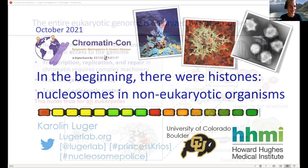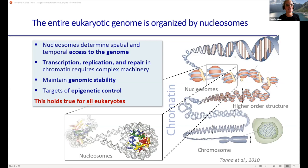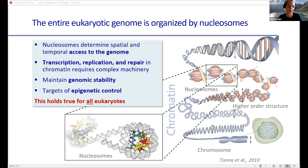The entire eukaryotic genome is organized by nucleosomes, and as such, they're really important to regulate access to transcription machinery, replication, repair. They maintain genomic stability and they're the targets of epigenetic control. This holds true universally for all eukaryotes.